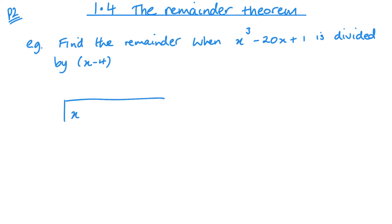Just fill this in so we've got x cubed. Now remember, if we've got no x squared term we need to make that space — minus 20x plus 1, and x minus 4 on the outside. Just remember this zero x squared is important; it's just like place value when you're doing long division.